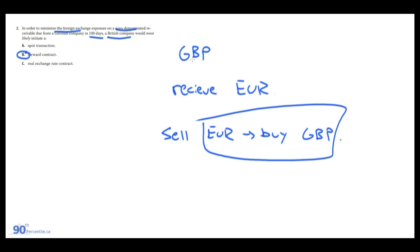As a quick side note: if they wanted to speculate and thought euros were going to appreciate versus pounds, they would effectively do nothing, and then in 100 days they could sell euros and get more pounds. But in this case, we want to minimize FX exposure, so that's done through forwards.